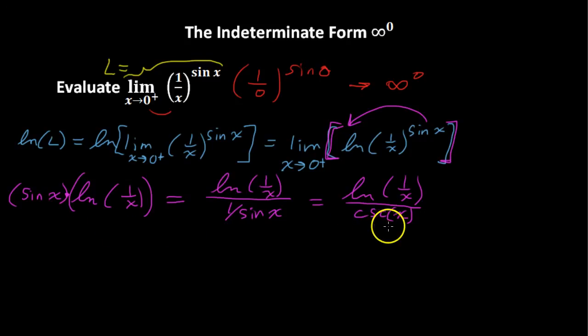Now instead of writing 1 over sine of x in the denominator here, I've written cosecant of x because that's what 1 over sine of x is. Now at this point, if we were to take the limit as x approaches 0 from the right, this would be an indeterminate form. So what we can and should do is take L'Hopital's rule.